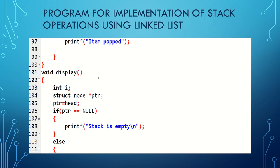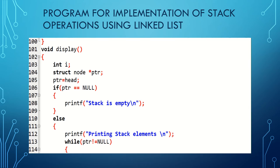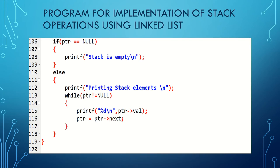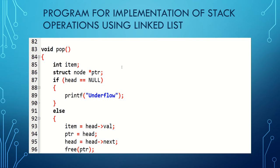Next is void display. Int i holds the remaining data values in nodes, and struct node pointer holds the address fields. Pointer is set to head. If pointer equals null, it prints 'stack is empty'. Otherwise, it prints 'printing stack elements' and enters a while loop: while ptr is not equal to null, it prints the ptr value and advances ptr to ptr next. Likewise all nodes in the stack are displayed.